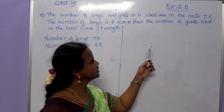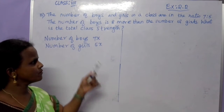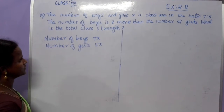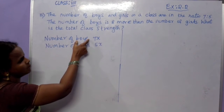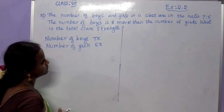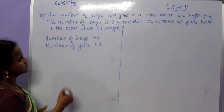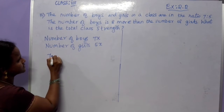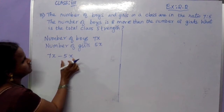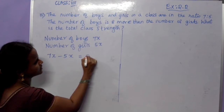What is the total class strength? We are going to find this total strength. First, we have to find the number of boys and girls. One condition is given: boys are 8 more than girls. So what is their difference? 7x minus 5x — the number of boys minus the number of girls. How much is their difference? 8.